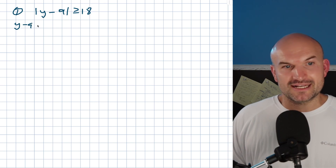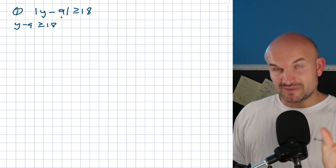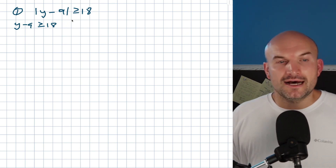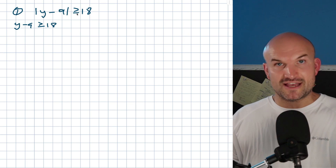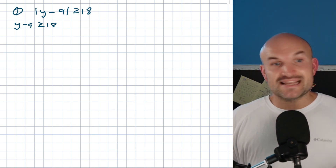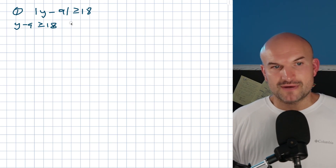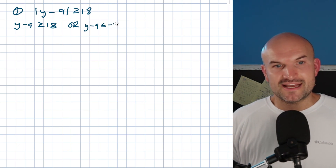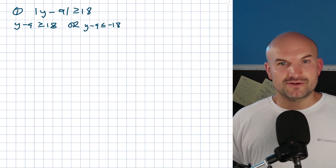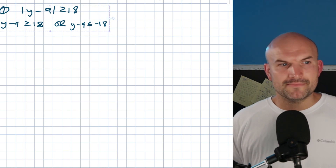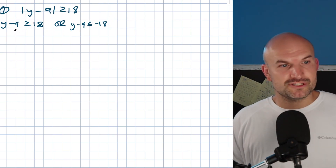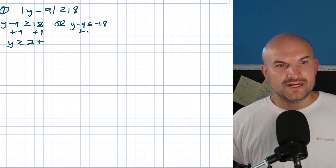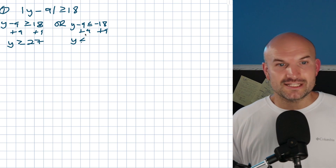We're going to have y minus nine is greater than or equal to 18 — the original without the absolute value — and then we negate it: flip the sign and negate the second answer, giving y minus nine is less than or equal to negative 18. Using inverse operations, add nine to both sides: y is greater than or equal to 27, and on the other side, y is less than or equal to negative nine.